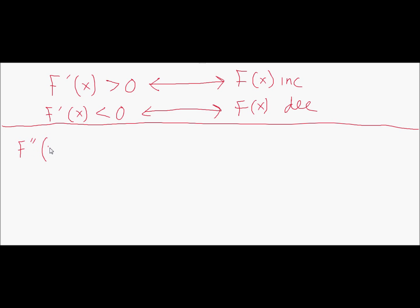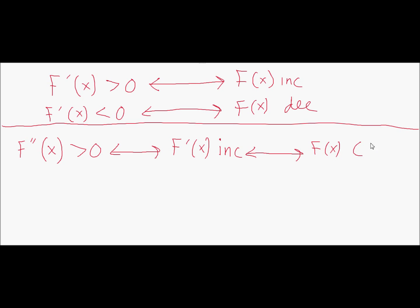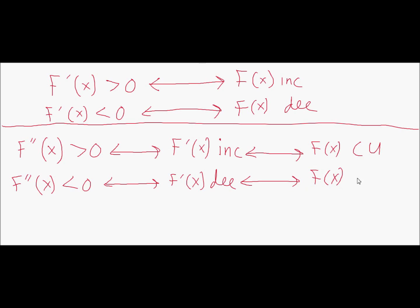But knowing that f double prime is positive does tell us something, because f double prime is really the derivative of f prime. So f double prime being greater than zero means f prime is increasing. Just as f prime greater than zero means f is increasing, f double prime greater than zero means f prime is increasing, and that in turn means f of x is concave up. If f double prime is negative, then f prime is decreasing, and that means f is concave down.